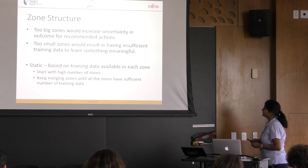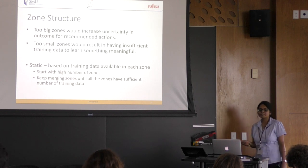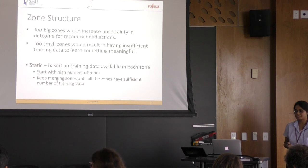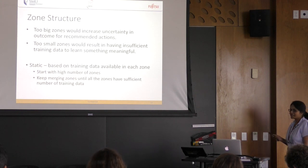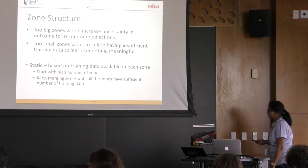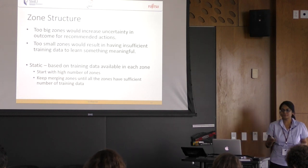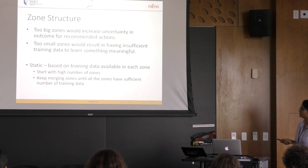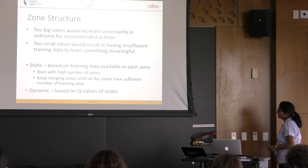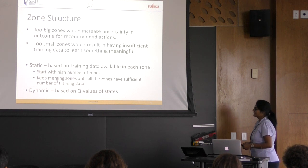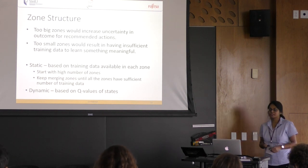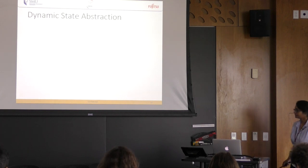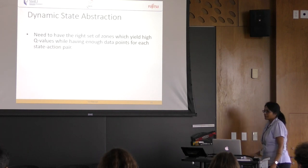We propose two methods to learn the zone structure. The first is the static method, which is based on the number of training data available in each state. We start with a high number of zones and keep merging nearby zones until each zone has a sufficient number of training data points. The second method is dynamic learning of the zone structure, which is based on Q values of the states.